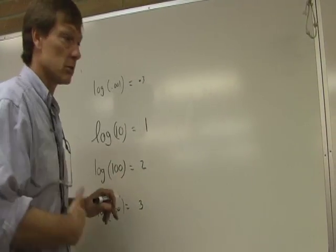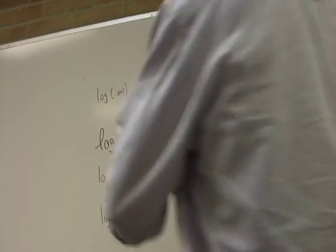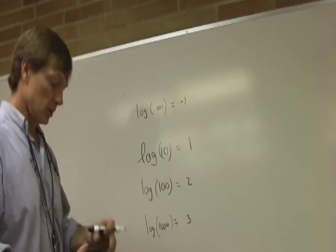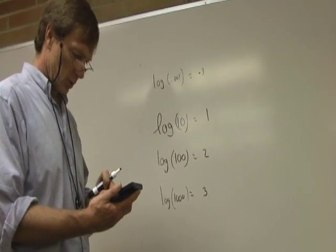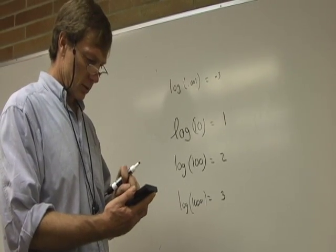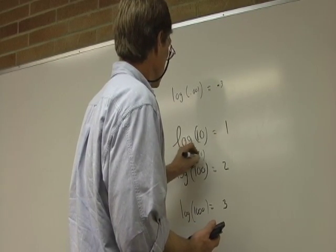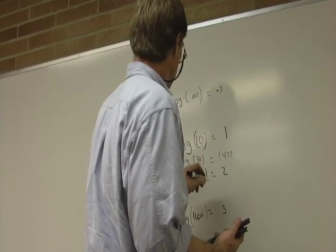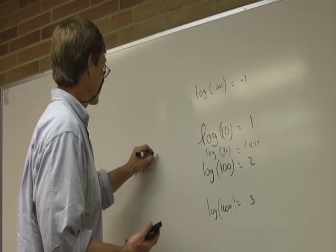The log of 30 would have to be somewhere between 1 and 2, because 30 is between 10 and 100. So I could say the log of 30 is 1.477. So that means 30 is the same as 10 to the 1.477 power.